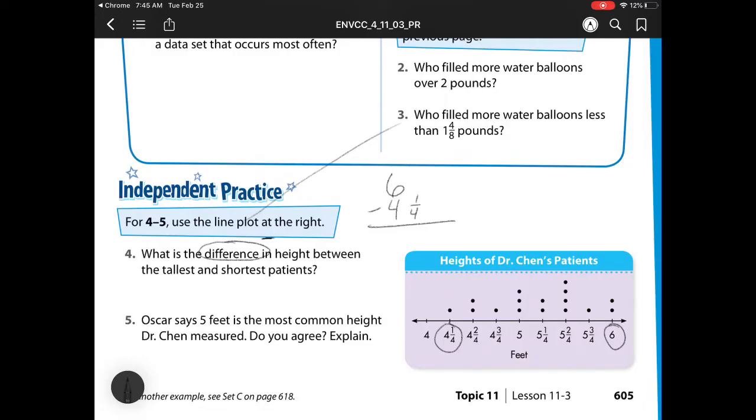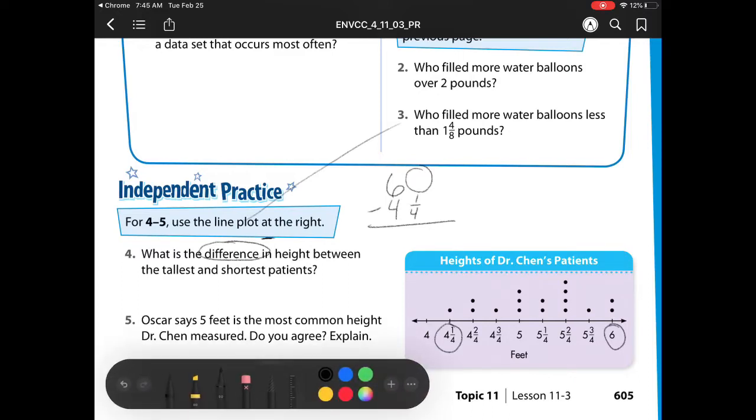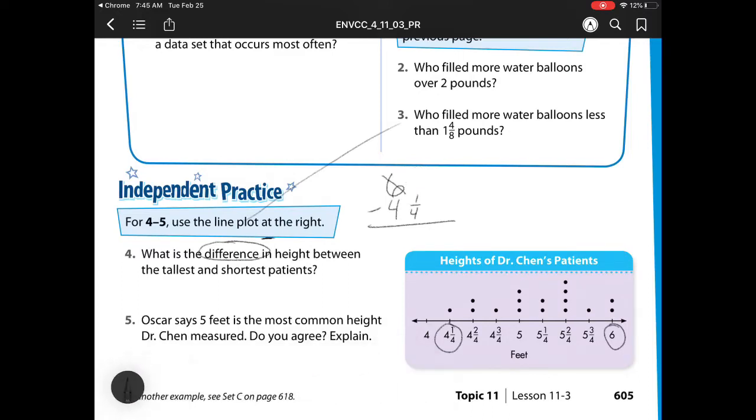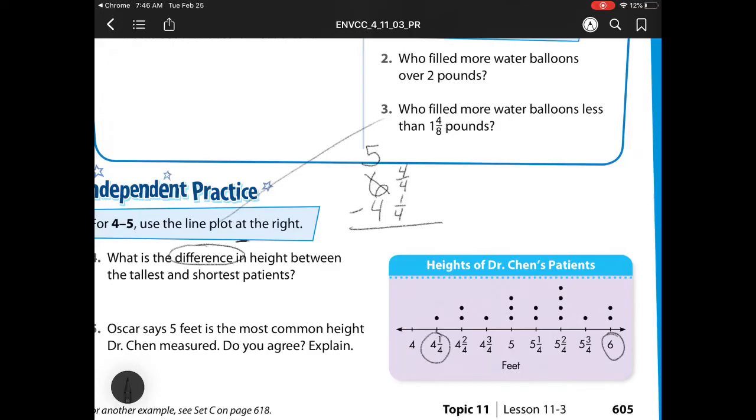So what do we need to do? Well, I have no fraction up here, so I'm going to have to regroup it. I need to take away 1 whole from this 6, so I have 5, and I'm trading it for fourths. So I'm trading it for 4 fourths. Remember, 4 fourths is the same as 1 whole, which is what we just borrowed from that 6. So now I have 4 fourths minus 1 fourth is 3 fourths. 5 minus 4 is 1, so my difference is 1 and 3 fourths of a foot.